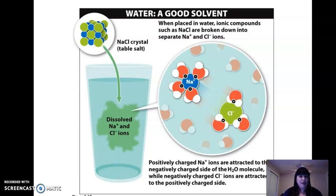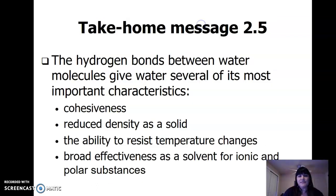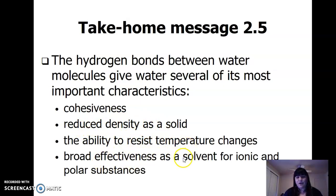Think about blood — blood is mostly made out of water, and a lot of chemical reactions can occur in that. So the four main properties of water are: cohesiveness, reduced density as a solid, the ability to resist temperature change, and broad effectiveness as a solvent for ionic polar substances.